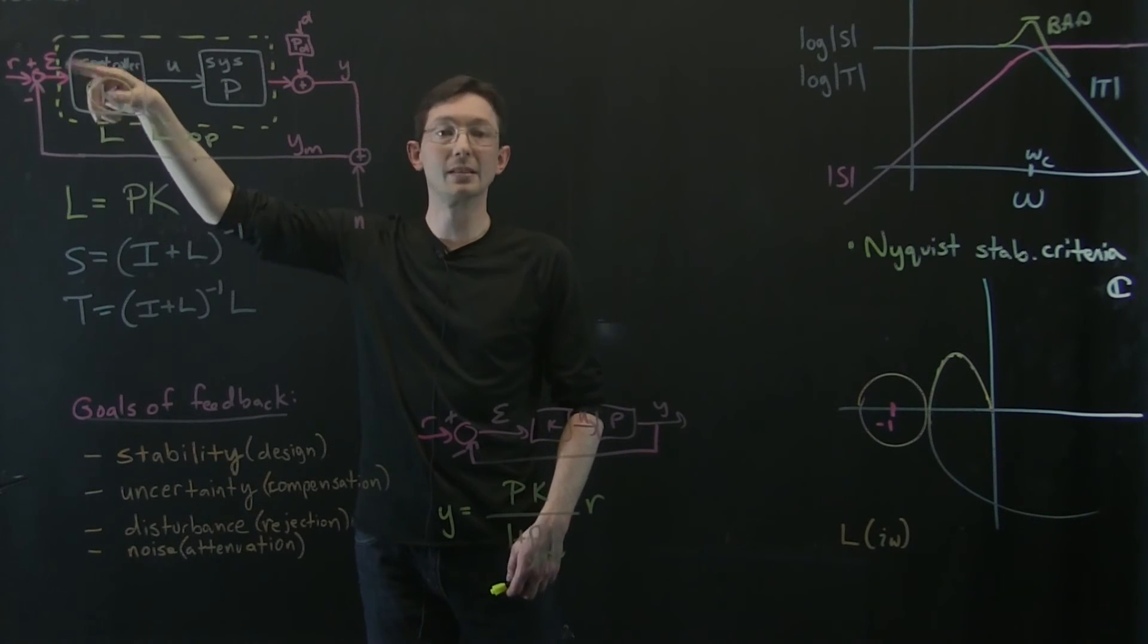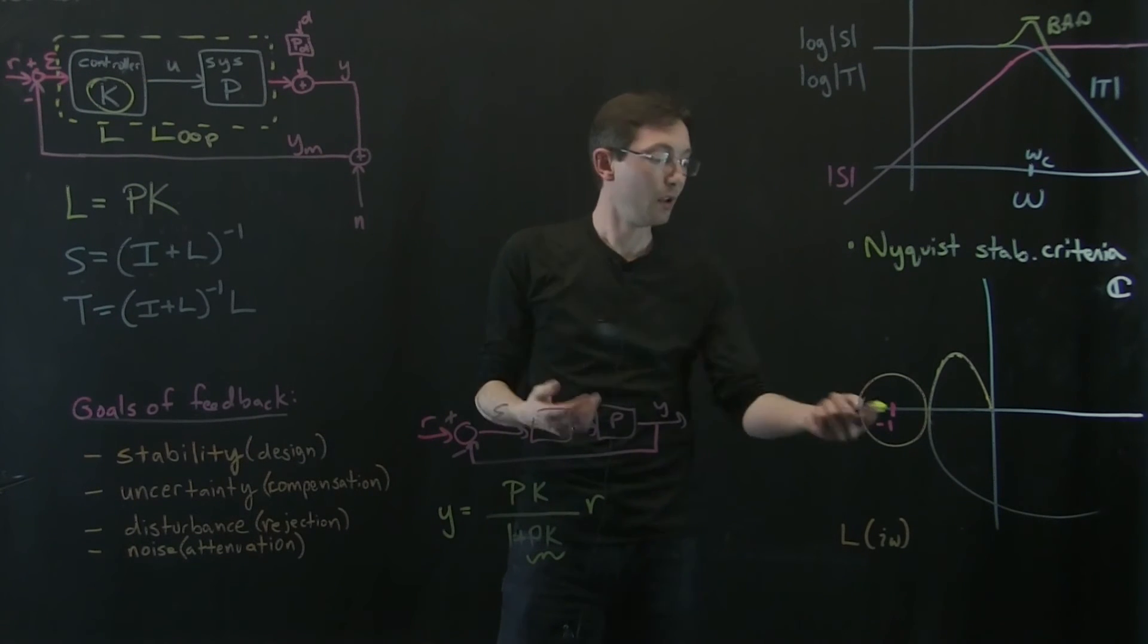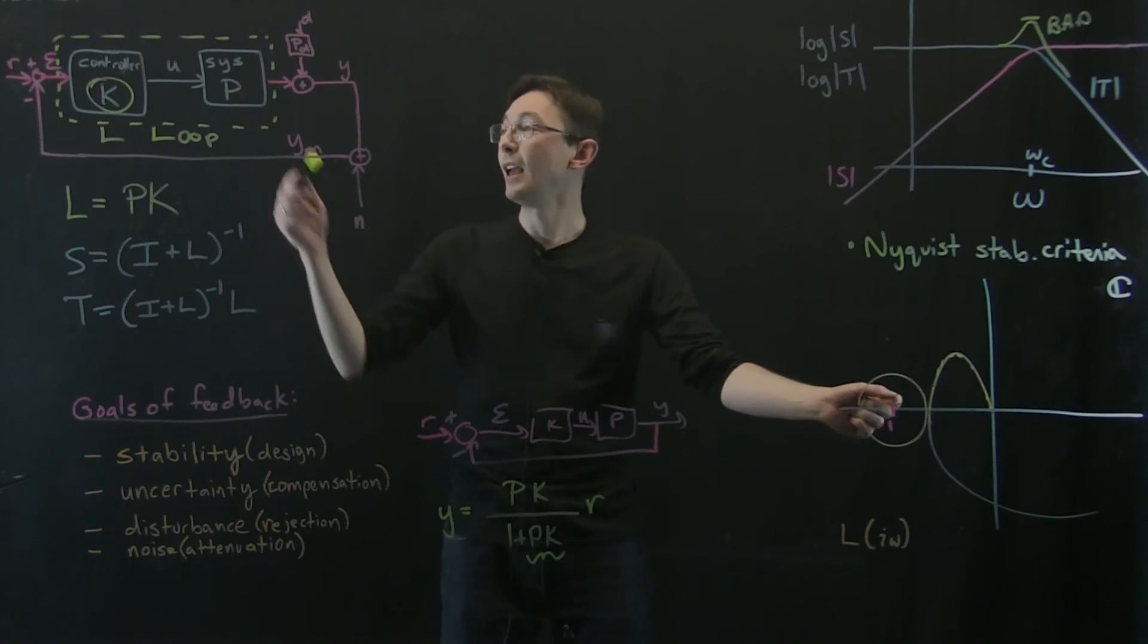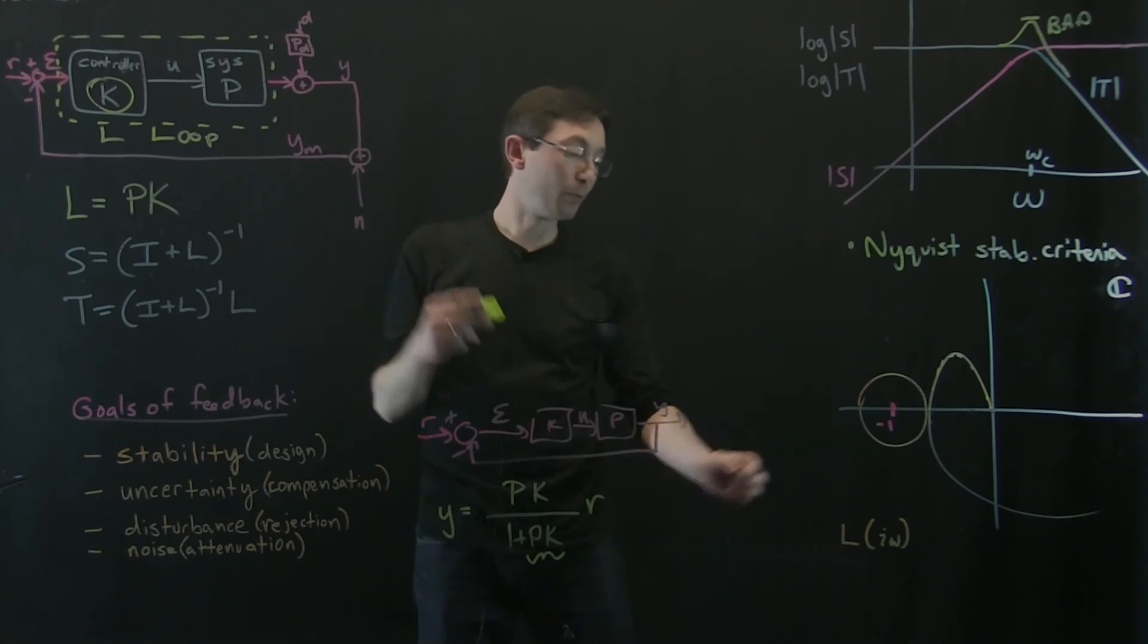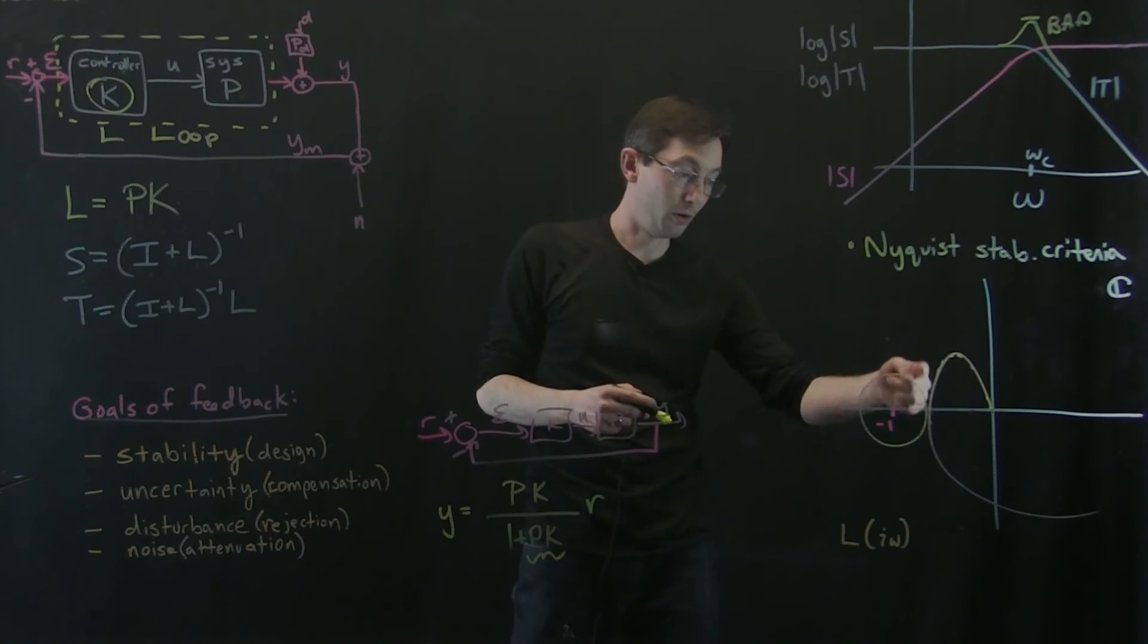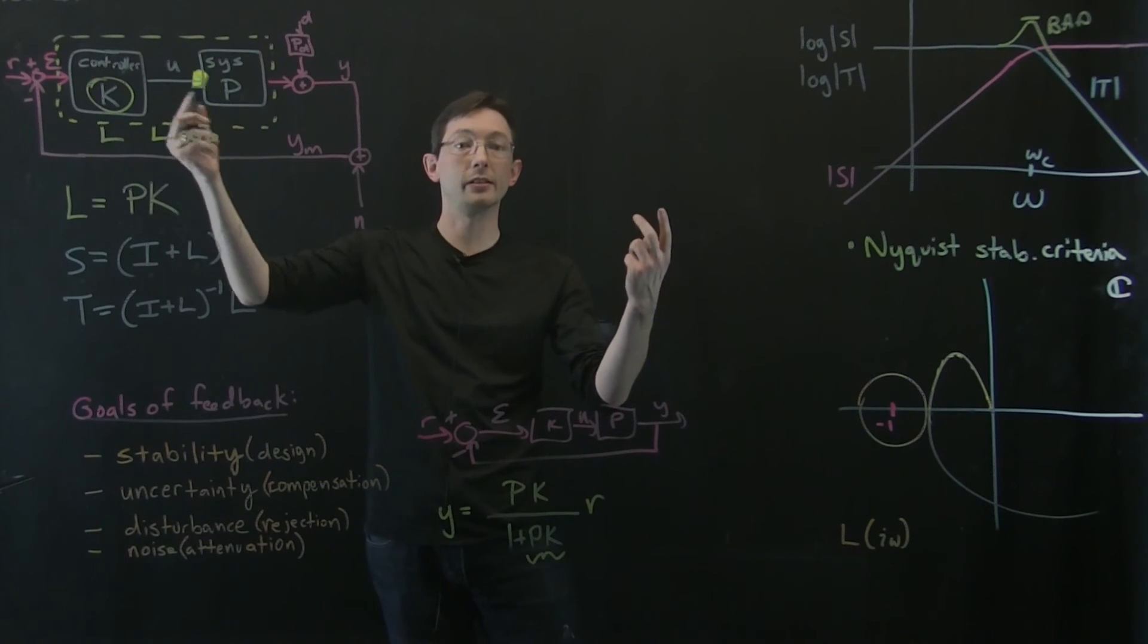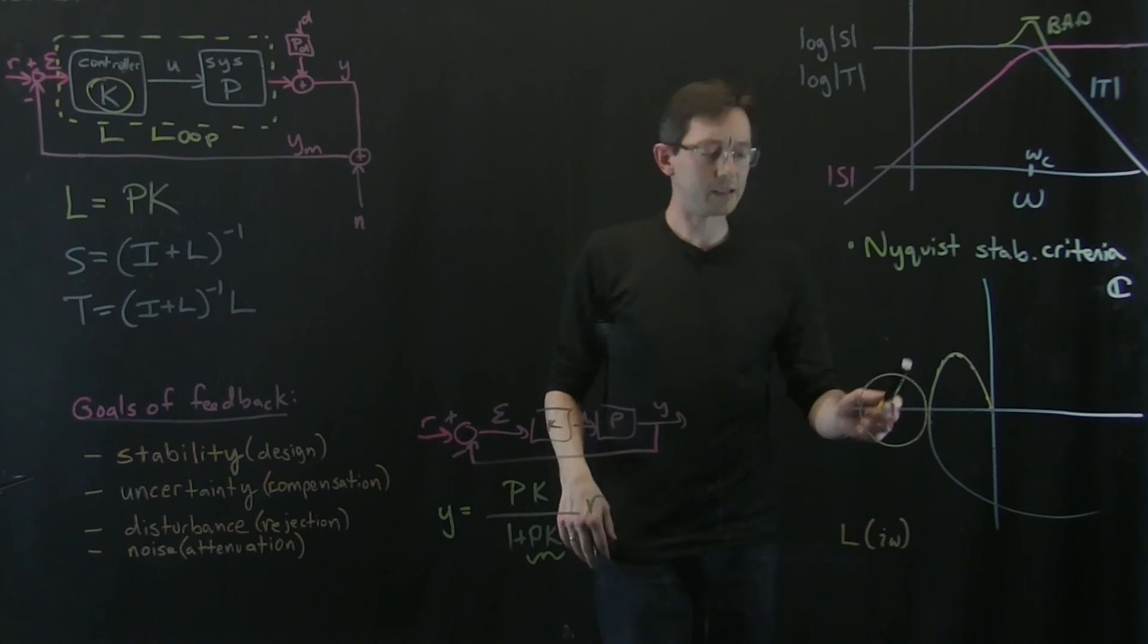So sometimes my control logic is going to have some time delays on how long it takes to compute the control law. Maybe I'm actually doing some complicated stuff in here and my computer takes a millisecond. Well, is a millisecond enough to make my system blow up? Sometimes. If you have a really non-robust system, small time delays can make your system blow up. But if I have a robust system, if I'm really far away from this point negative one at all of the points on my loop transfer function, then I'm pretty robust to time delays and model uncertainty and increases in gain.